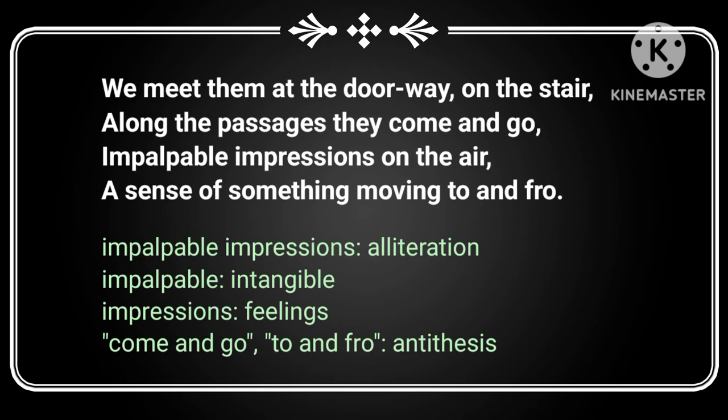The speaker says he feels a sense of something moving to and fro. He knows the history of the people who died in that house and can connect with their memories. He can feel the memories that took place there as they move to and fro. Notice the phrases 'to and fro' and 'come and go' — the two words in each pair are of exactly opposite meanings placed side by side. Such a figure of speech is called an antithesis. So the expressions 'to and fro' and 'come and go' are examples of antithesis.